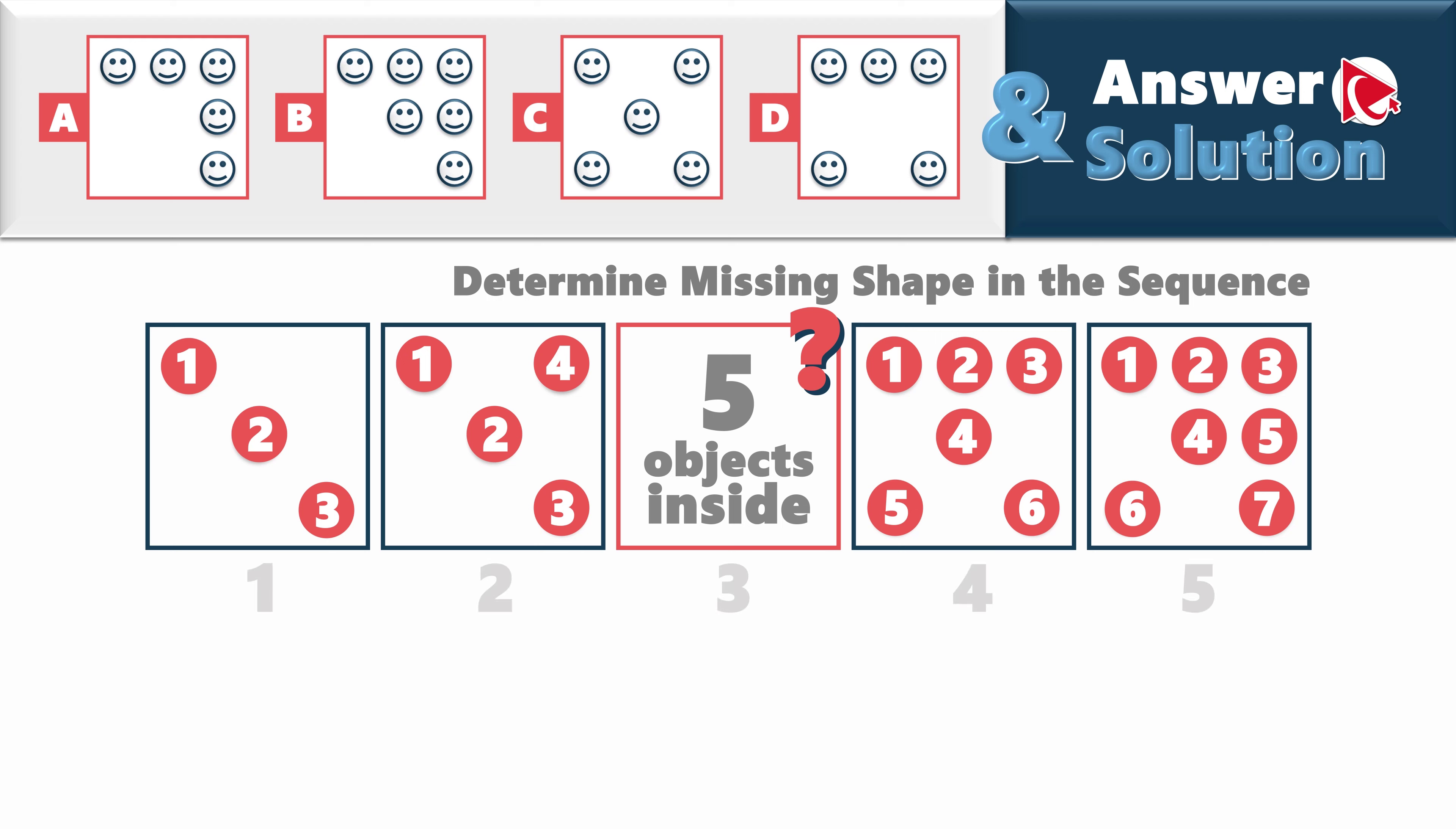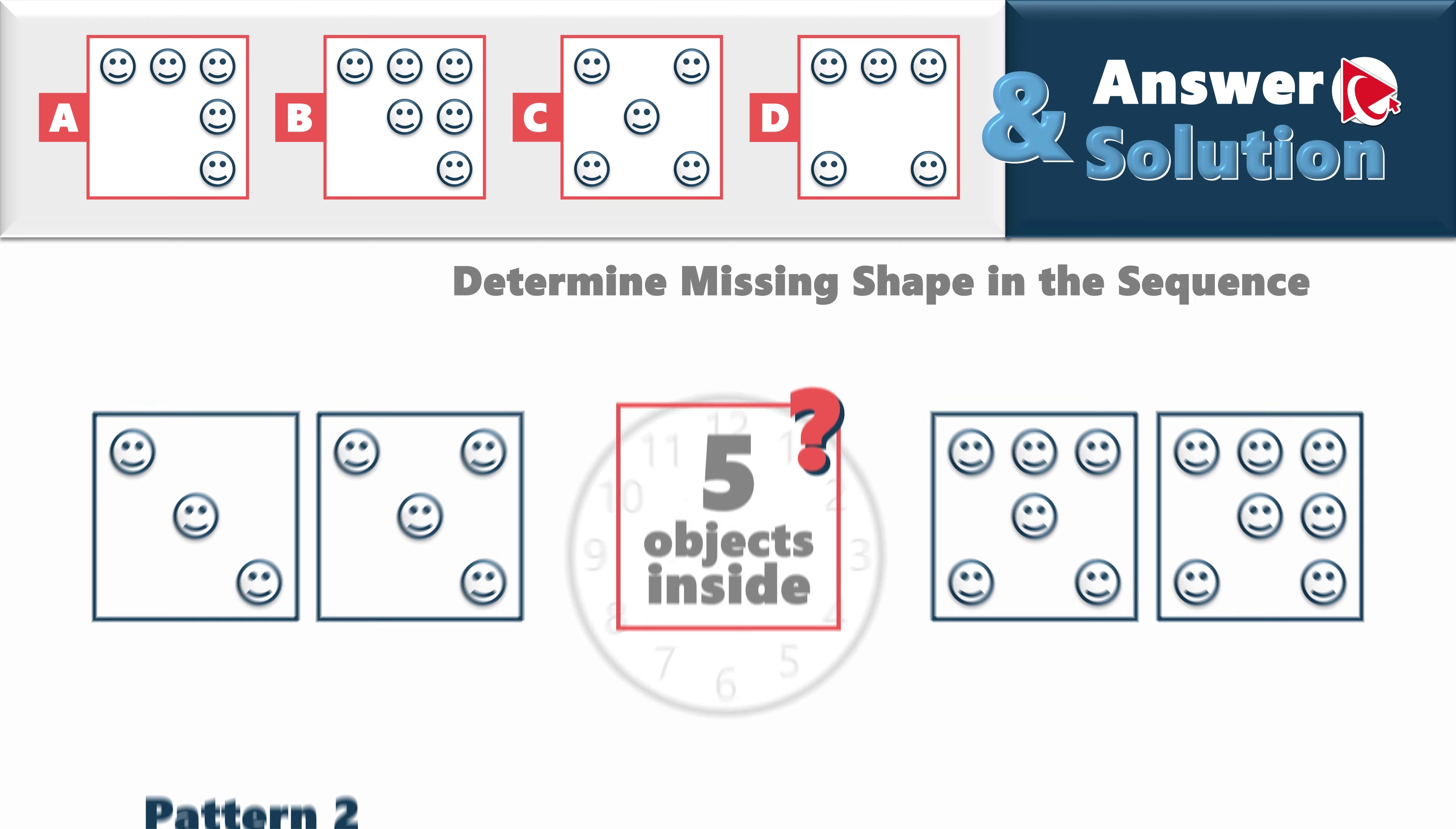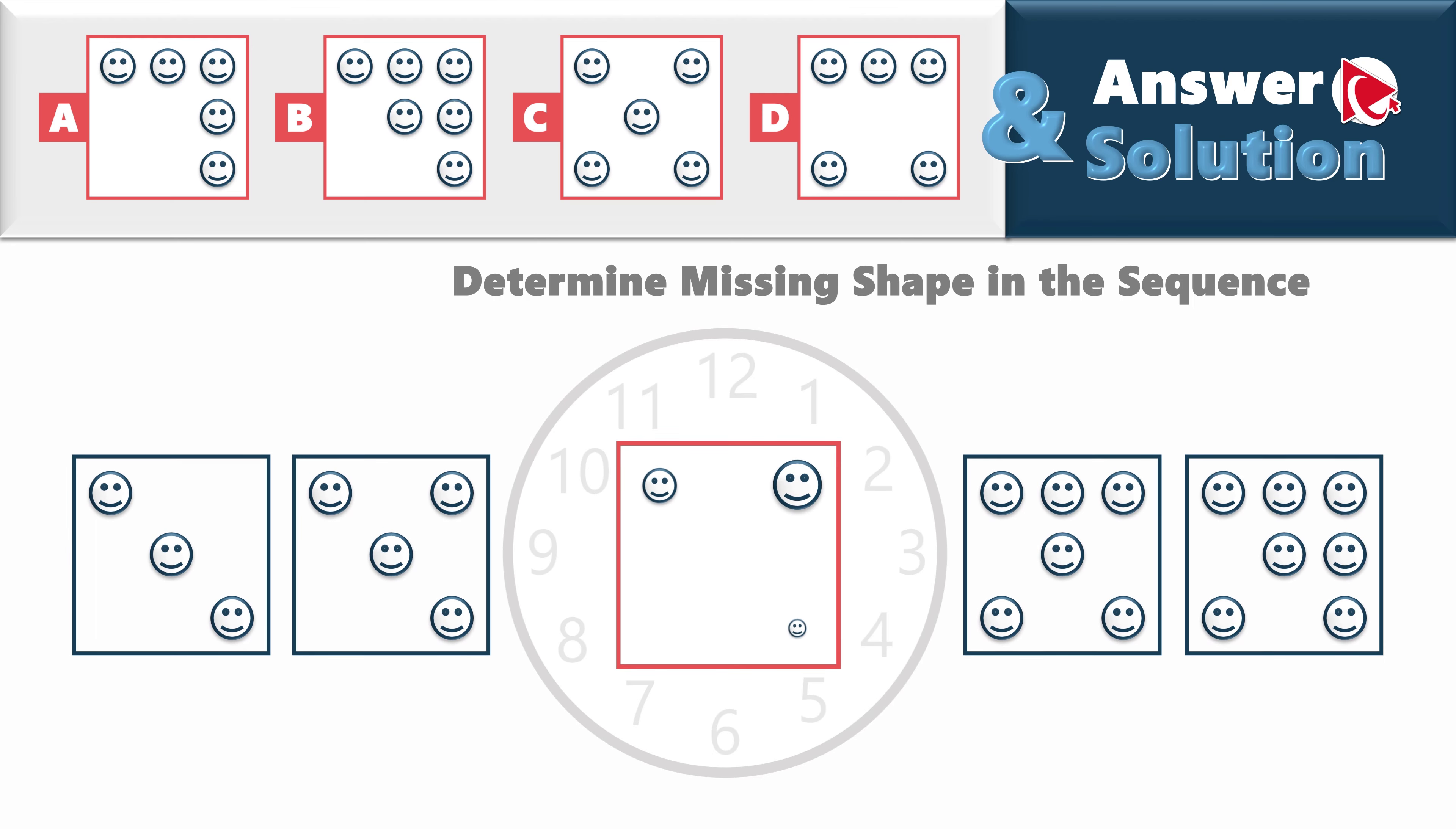Well, we do it by finding the second pattern. And the second pattern is that shapes fill the corners first. And then, starting at 12 o'clock, they fill up the missing spaces. Let's look at the example. As you can see, in shape 3, the missing smiley face would be at 7 o'clock.